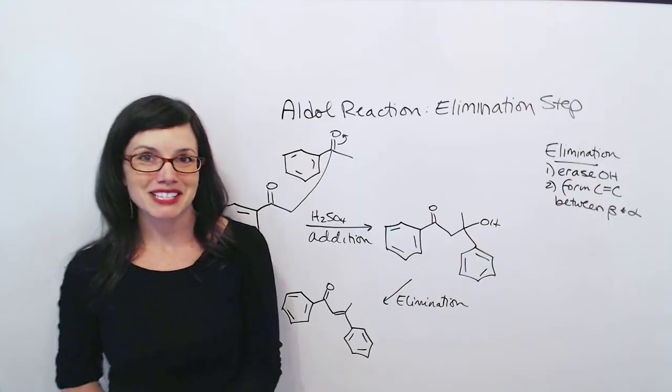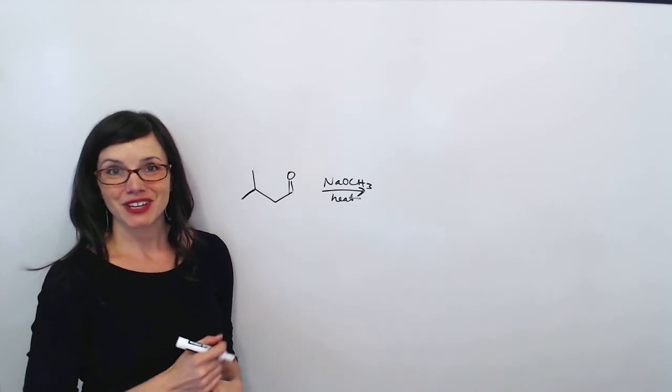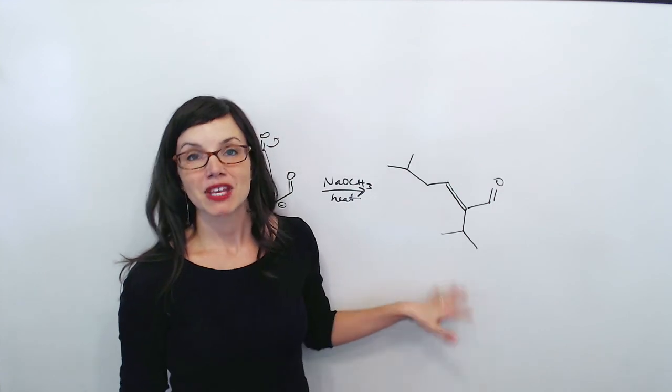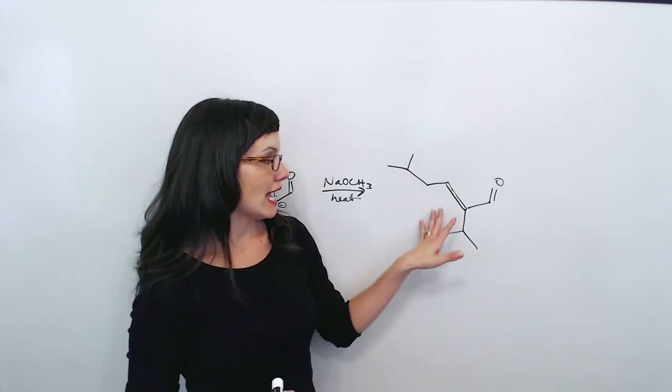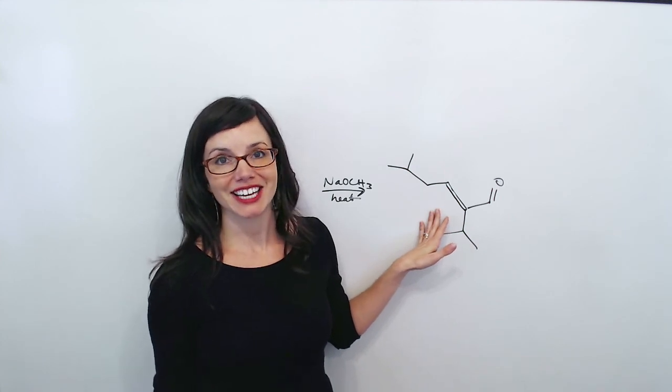Let's try one more example. Can you predict the aldol condensation products of this reaction? This is the answer I got. Hopefully yours looks something like this. And again, don't forget that any double bond you create is going to be a mixture of cis and trans or E and Z.